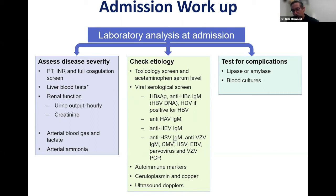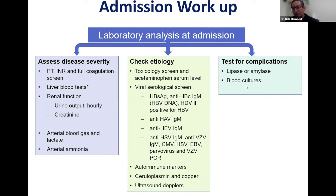We check for autoimmune hepatitis in young persons. Wilson's disease can present as acute liver failure — ceruloplasmin and urinary copper can help. Every patient should get an ultrasound with Doppler to make sure there is no evidence of obstruction of the hepatic veins. For complications, check amylase or lipase at admission for pancreatitis. Infections are a common cause of death, so we check blood cultures — though there is debate about whether to start antibiotics immediately or wait, getting blood cultures is key.